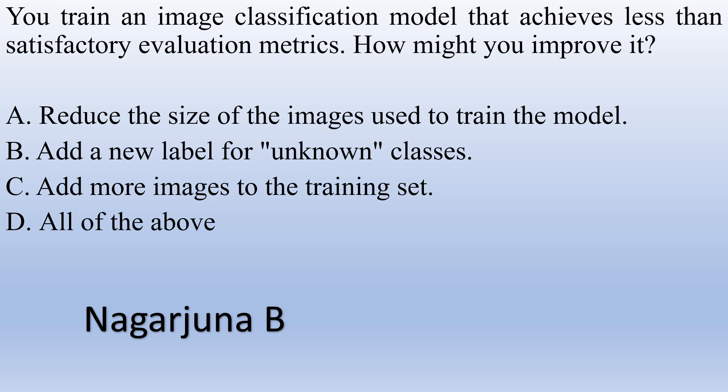Your image classification model is not achieving satisfactory evaluation metrics. How might you improve it? Option A: Reduce the size of the images used to train the model. Option B: Add a new label for unknown classes. Option C: Add more images to the training set. Option D: All of the above. The right answer is add more images to the training set. When you add more images, the classification model will achieve more than satisfactory evaluation metrics.